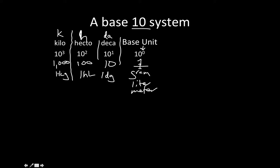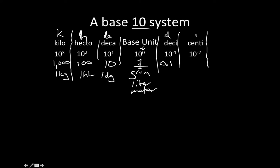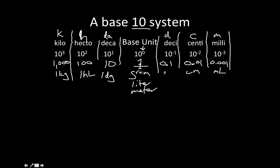Going the other way: deci is lowercase d, which equals 0.1 — we just move the decimal place one spot. Next is centi, lowercase c, which equals 0.01. And milli, lowercase m, equals 0.001. So we could have a centimeter, a milliliter, or a decigram.